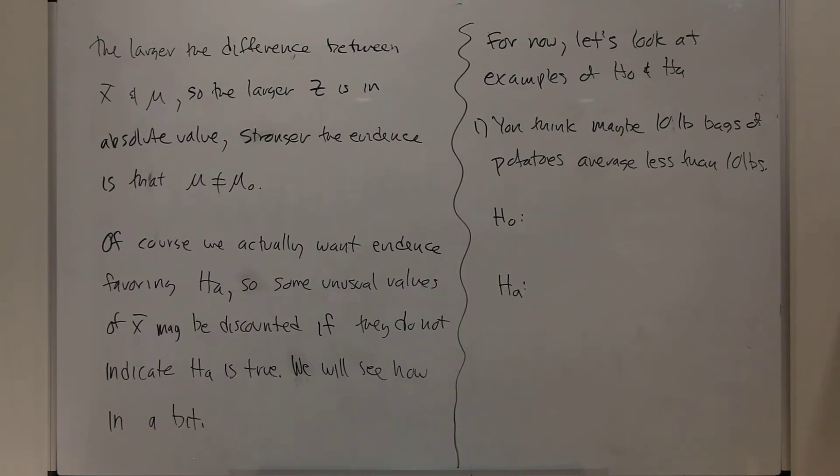For now, let's look at examples of H0 and HA before we actually continue the process. Here's another potato example. You think maybe 10-pound bags of potatoes average less than 10 pounds. So the experiment you might do is buy a bunch of 10-pound bags of potatoes and look at the average weight and use that to figure out whether on average it looks like the bags are being bagged correctly.